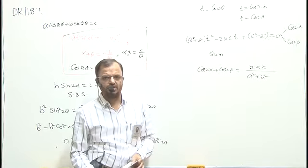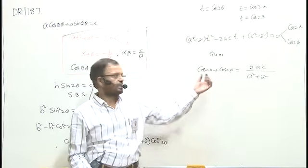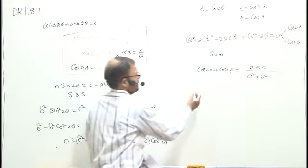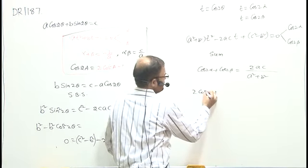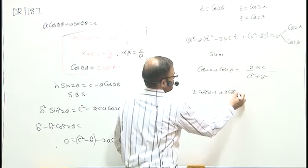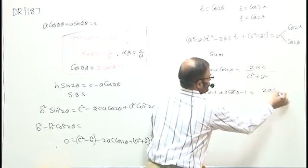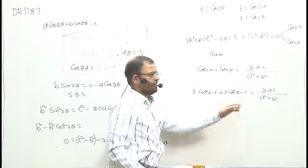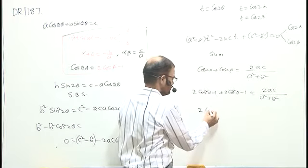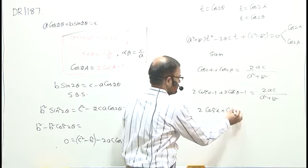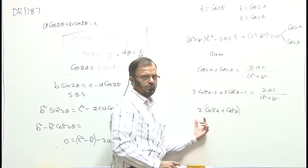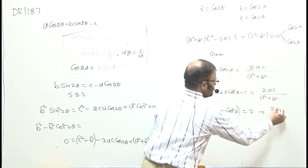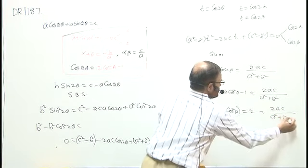I want the result in terms of cos²α. Using the formula cos2a = 2cos²a minus 1, I can write: (2cos²α minus 1) plus (2cos²β minus 1) equals 2ac/(a² + b²). The minus 1 minus 1 gives minus 2, pushing to the right side. Taking 2 as common: 2(cos²α + cos²β) equals 2ac/(a² + b²) plus 2.